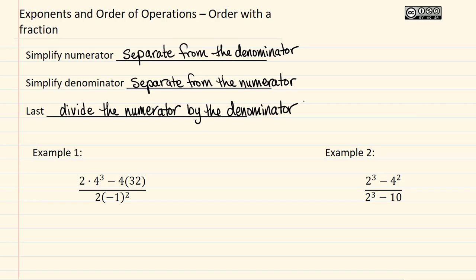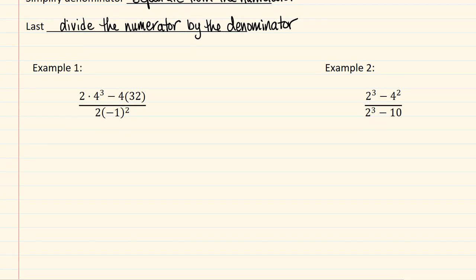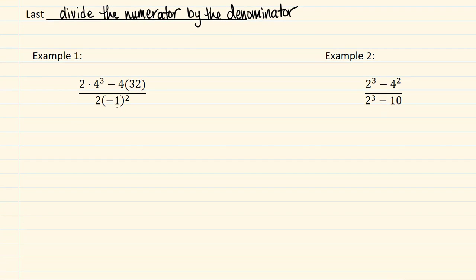So let's get started. Example 1 has this expression 2 times 4 to the third minus 4 times the quantity 32, all over 2 times negative 1 squared. And so we're going to attack the numerator first. Remember with PEMDAS, we're going to do parentheses first.